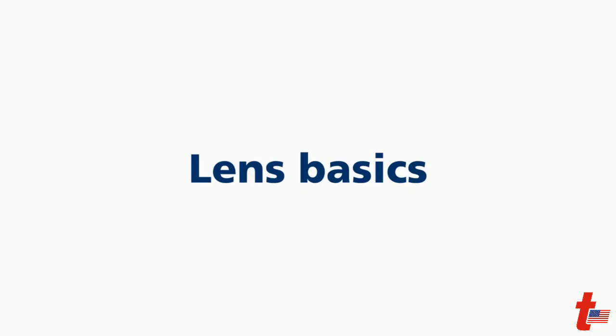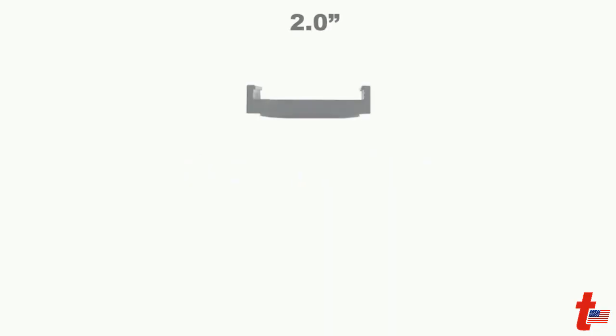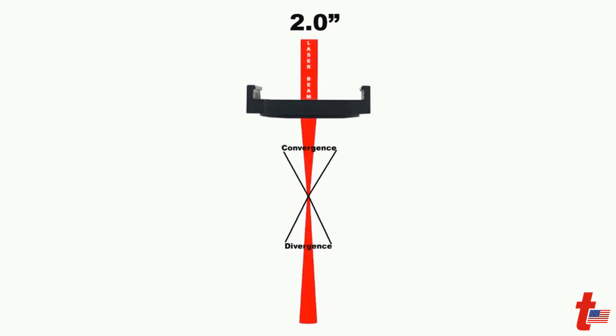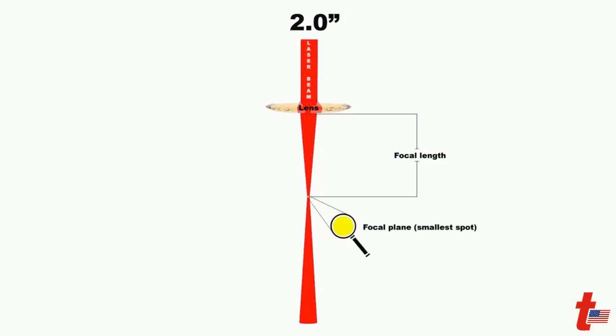About the basics of a lens. Here you can see the lens and when the laser beam will go through it, it will converge and diverge. The distance from the lens to the focal plane or focus point, the smaller spot, is called the focal length. So in this case the focal length is 2 inches, since it's a 2 inch lens. The focal plane or focus point is here, which is the smallest diameter of the laser beam in its transition between convergence and divergence.